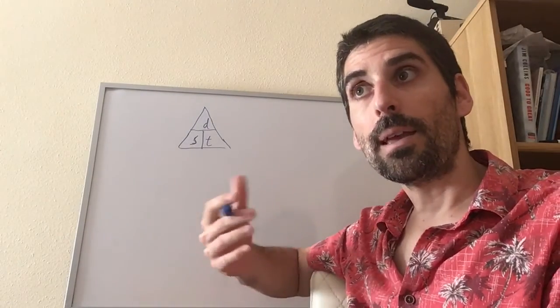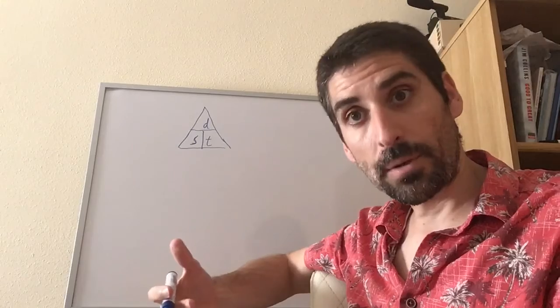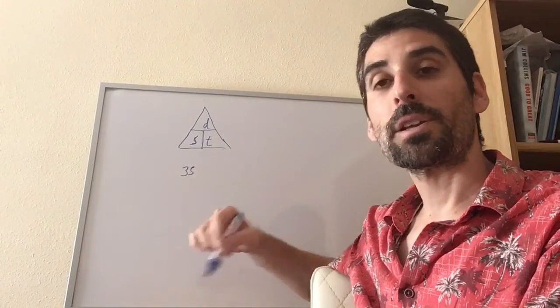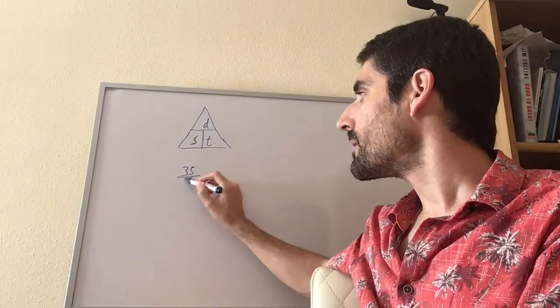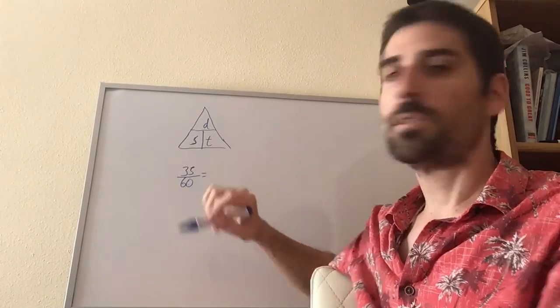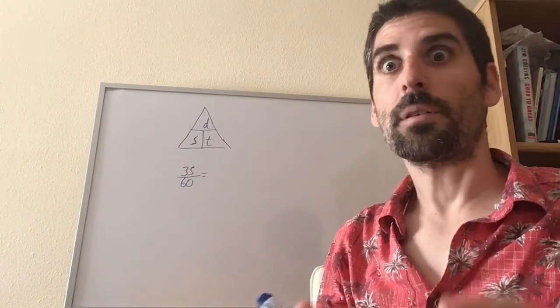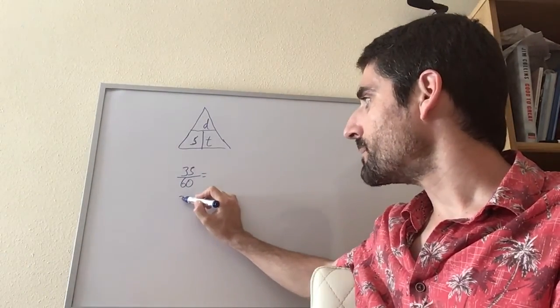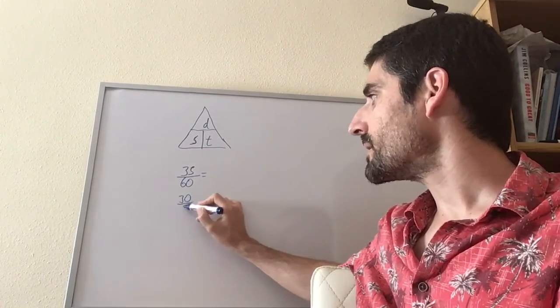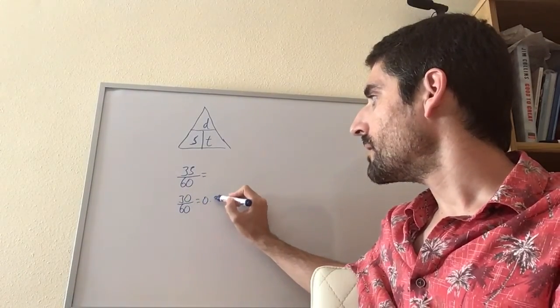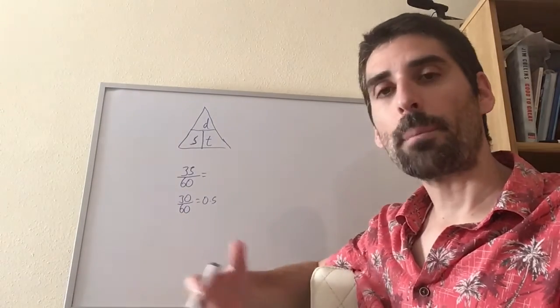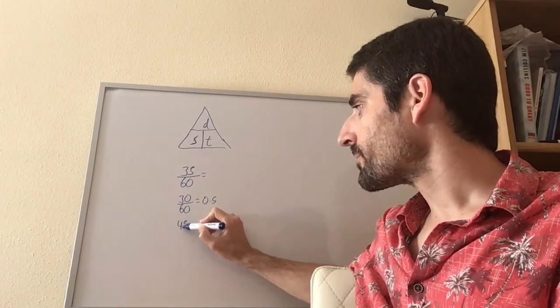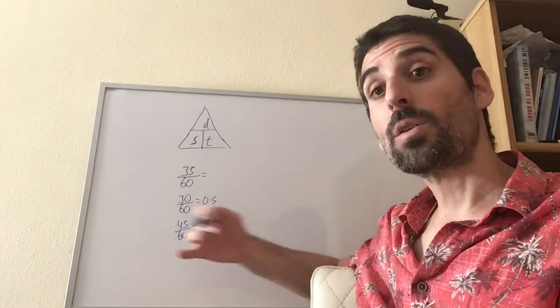And the other crucial thing that I mentioned earlier is when you're dealing with changing hours into minutes or minutes into hours. Like I said to you in this formula, the time, if you're working in kilometers per hour, the time has to be in hours. So if I've got 35 minutes and I want to change it into hours, 35 divided by 60. Because we know that 30 minutes is half an hour, and 30 divided by 60 is 0.5, which is a half, so that makes sense.